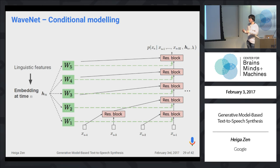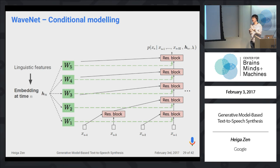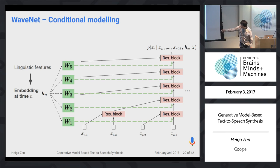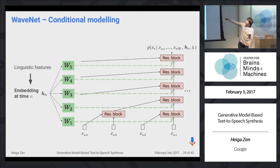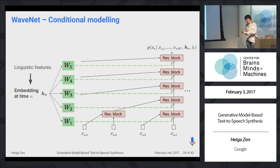The previous WaveNet description is for unconditional modeling. For text-to-speech, we need to provide linguistic information. First we extract linguistic features and get embeddings at each time step, then feed these embeddings into each residual block. We can then obtain the probability distribution of each sample given the linguistic embedding information.